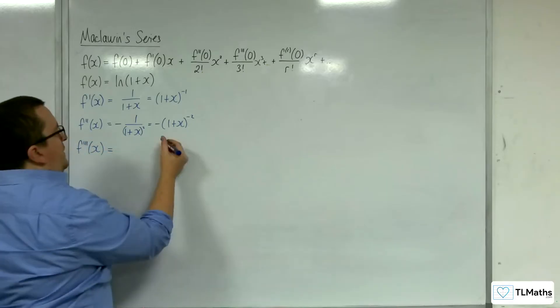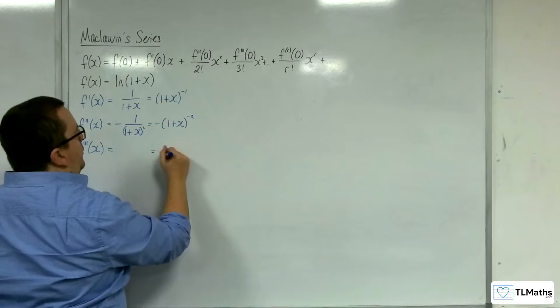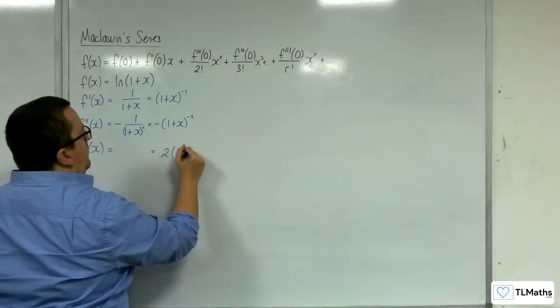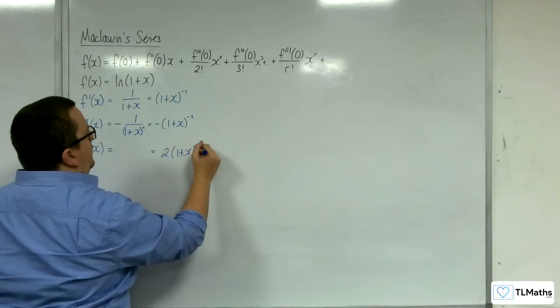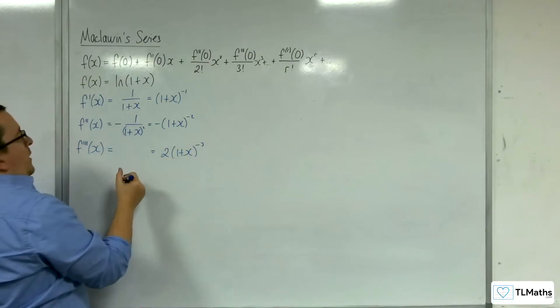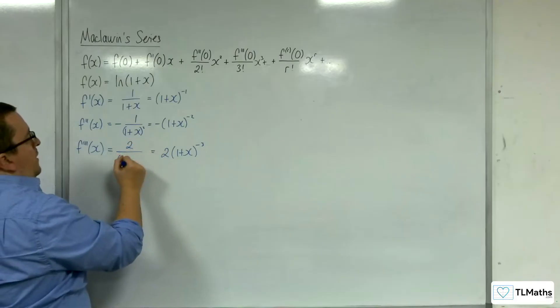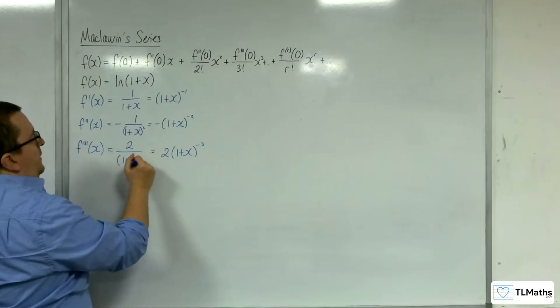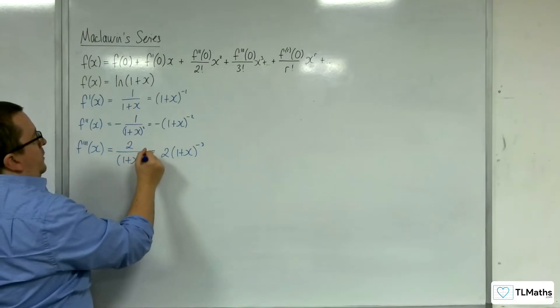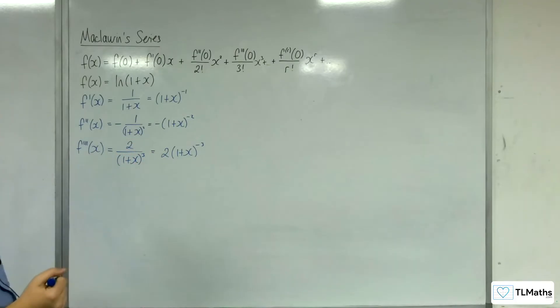So if I differentiate that, I would get 2 times 1 plus x to the minus 3, so we're going to have 2 over 1 plus x cubed.